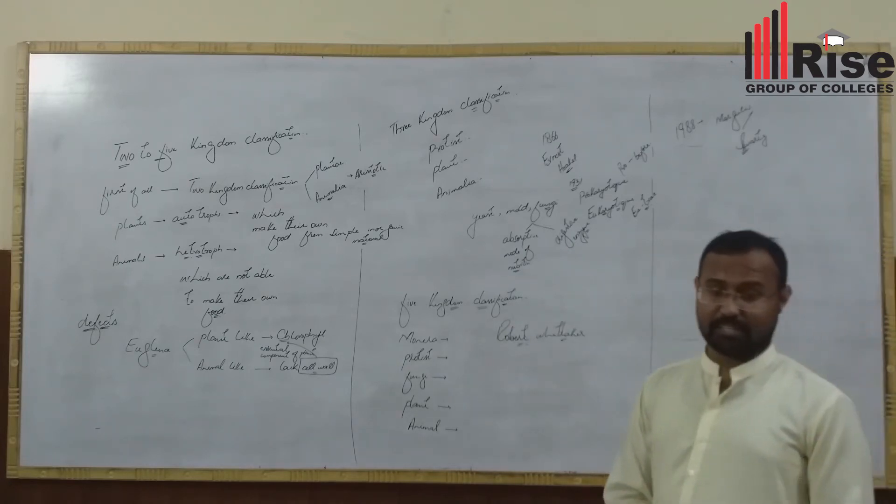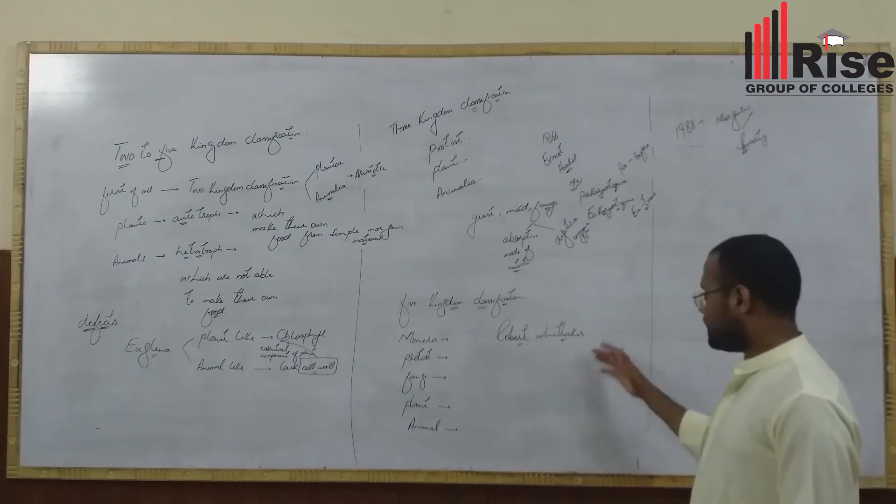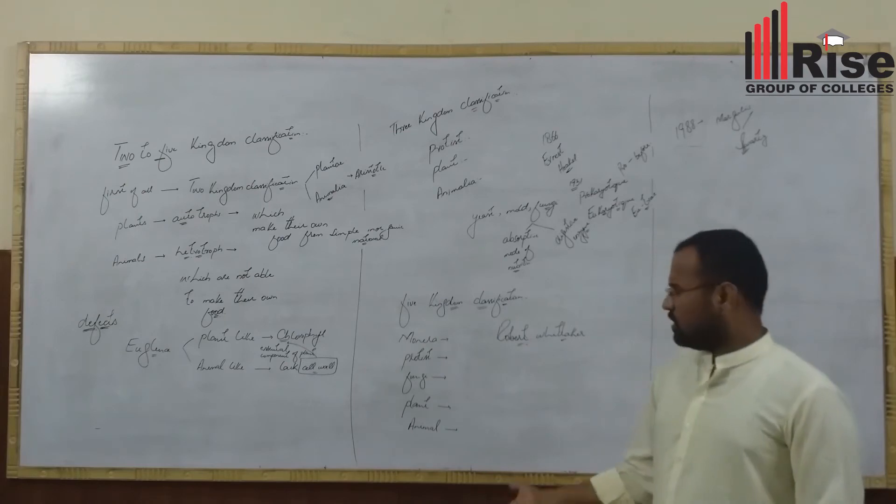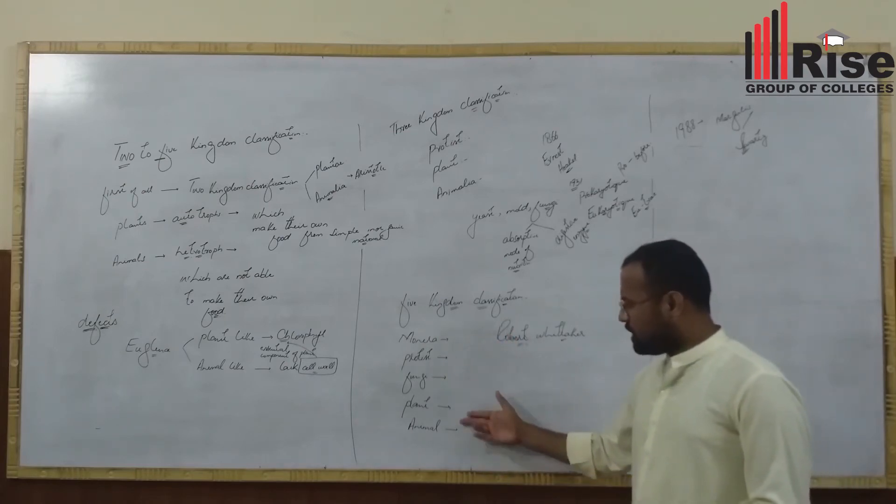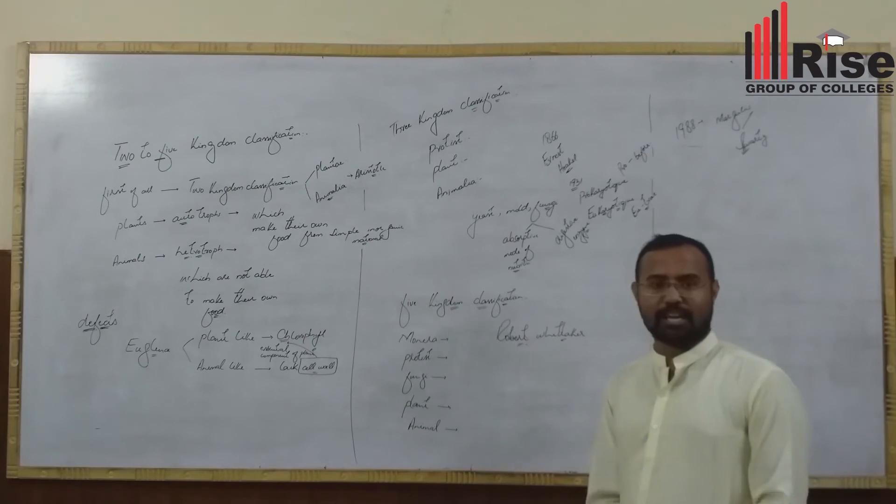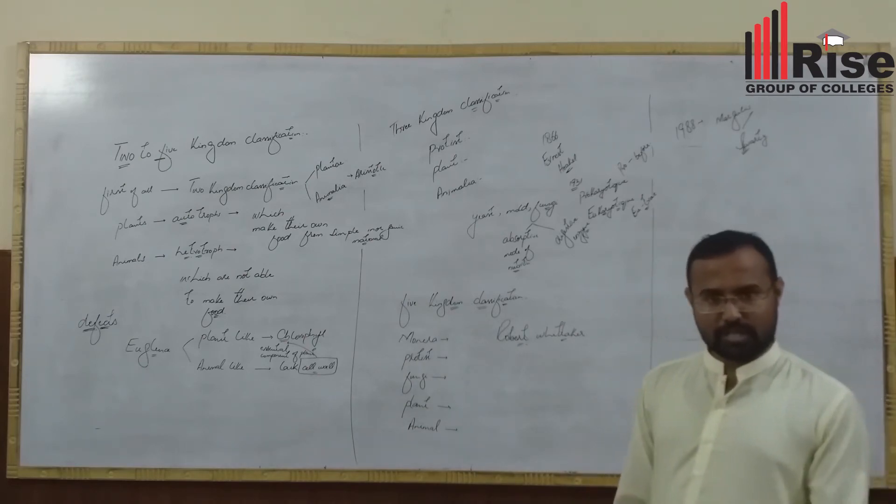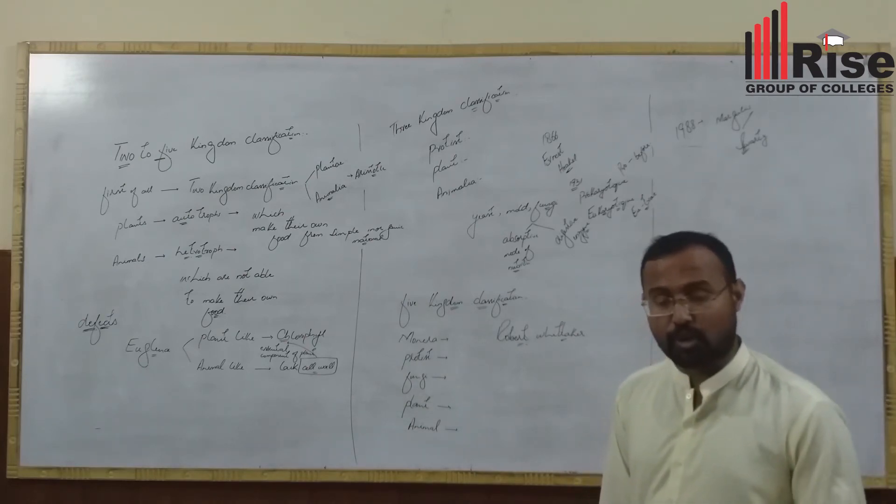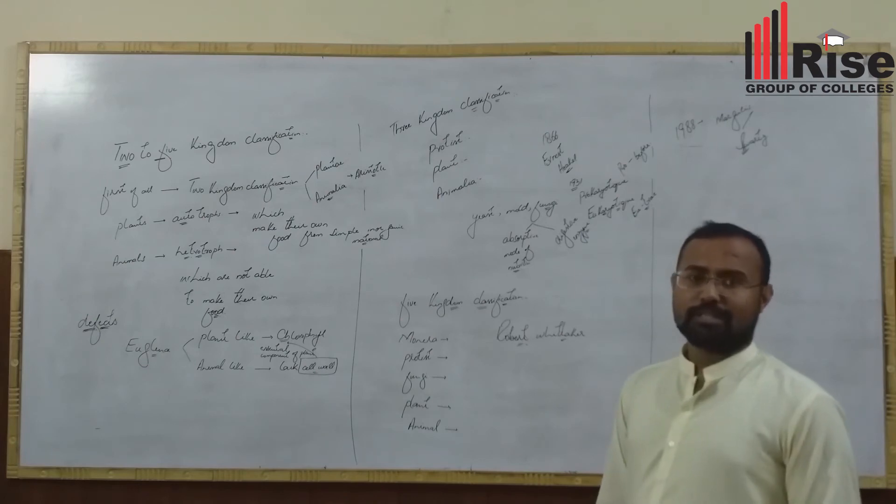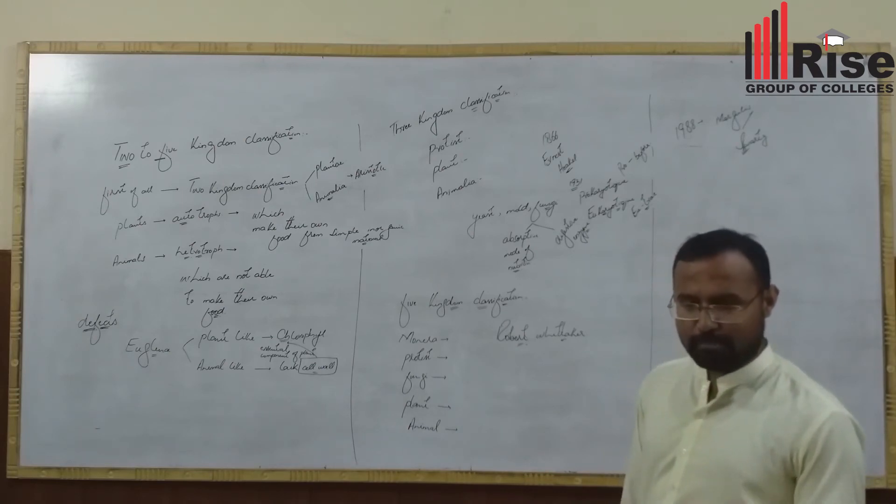Five kingdom classification was given by Whittaker in 1969. The kingdoms are Monera, Protista, Fungi, Plantae, and Animalia. Protists are simple, mostly unicellular organisms.